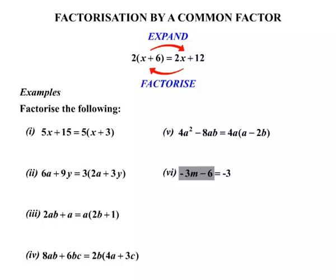So we can take the negative 3 out, because 3 is a factor of both, but also the negative. Both terms are negative. We can take the negative out. So then we have the brackets.